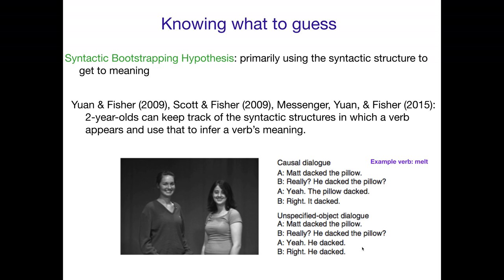Versus an unspecified object use: 'Matt dacked the pillow.' 'Yeah, he dacked.' Here the object is simply dropped optionally — this is a verb like 'eat,' where you can drop the object. By looking at how novel verbs combine with nouns, the orders in which they combine, and what swaps into the object or subject position, adults — and two-year-olds — can figure out what kind of action a verb refers to. Two-year-olds are really syntactic bootstrapping masters.